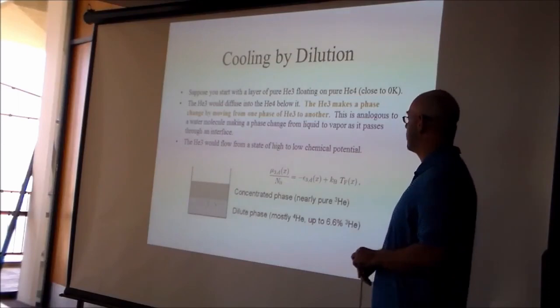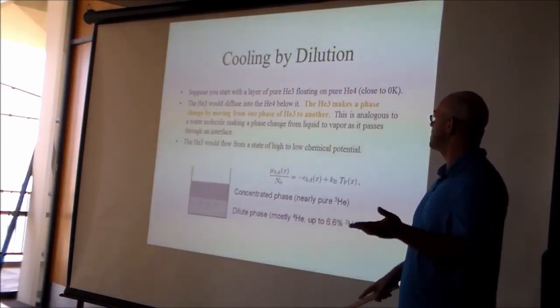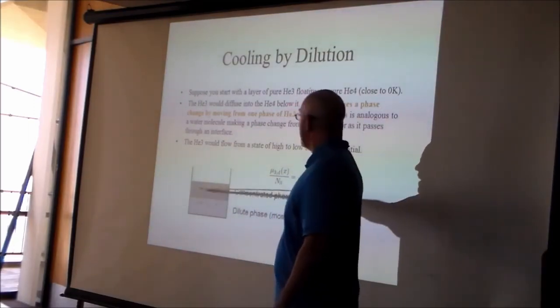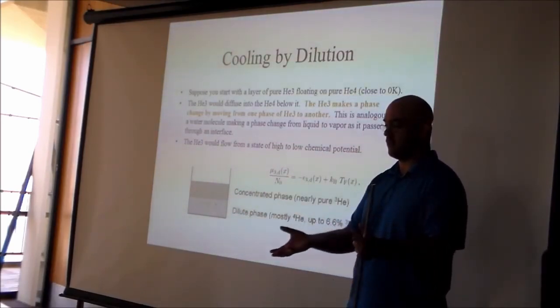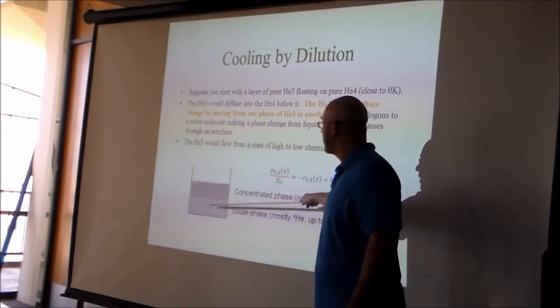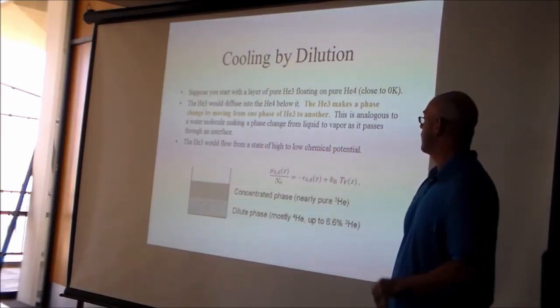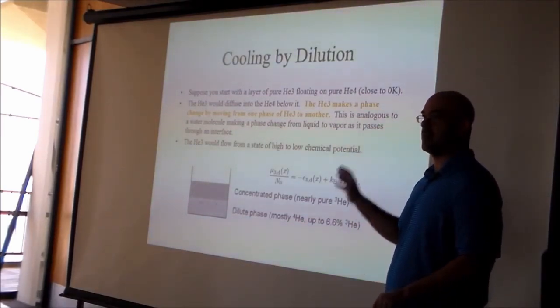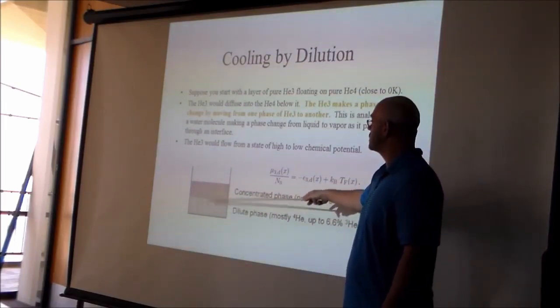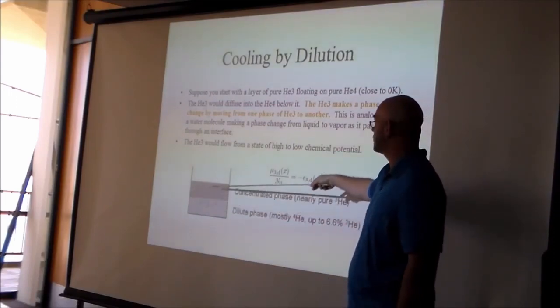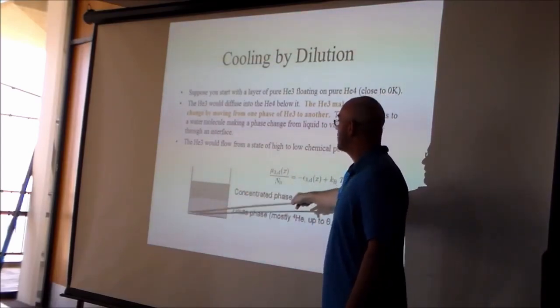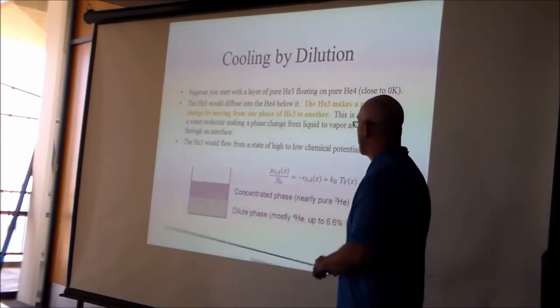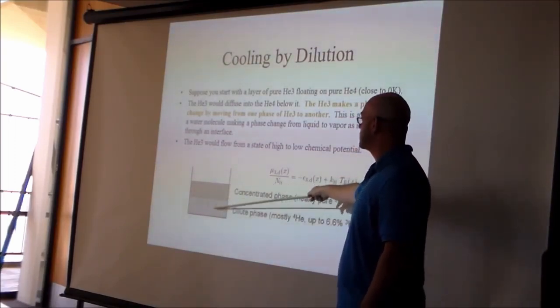Now let's move on to how the dilution refrigerator works. In this thought experiment, imagine a layer of helium-3 sitting on top of helium-4 at T = 0. Helium-4 is denser and sits on the bottom; helium-3 is on top. Helium-3 will begin diffusing into the helium-4. The pure helium-3 layer is called the concentrated phase, and the helium-4 layer with some helium-3 mixed in is called the dilute phase.